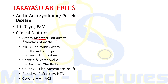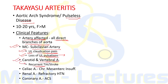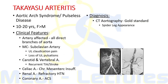Takayasu can affect all direct branches of the aorta, but the most common is the subclavian artery, leading to upper limb claudication and loss of upper limb pulsations — hence the name 'pulseless disease.' Carotid and vertebral artery involvement leads to recurrent TIAs or stroke. Celiac artery involvement causes chronic mesenteric insufficiency. Renal artery involvement presents with refractory hypertension, and coronary artery involvement can lead to acute coronary syndrome.